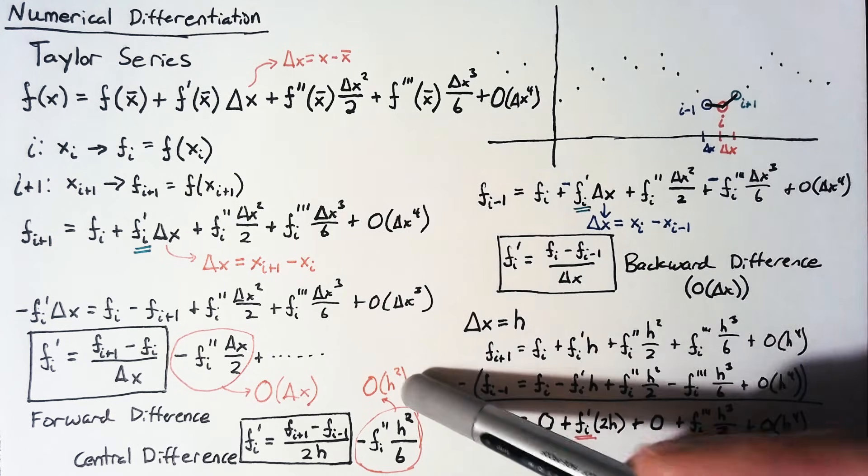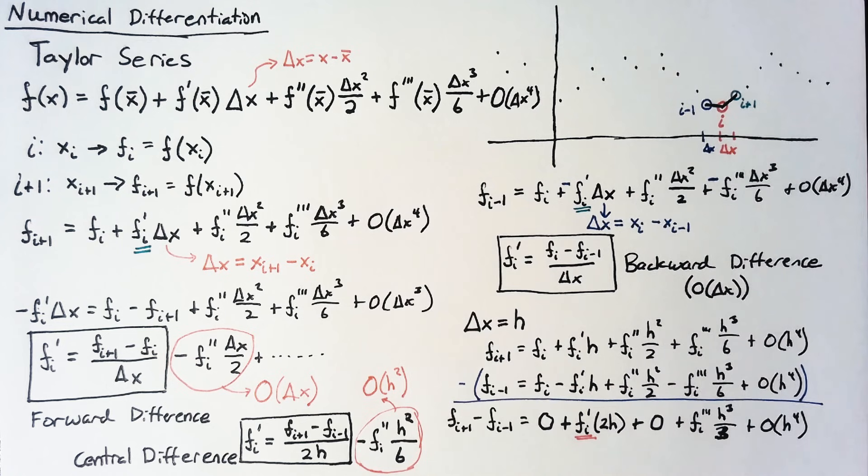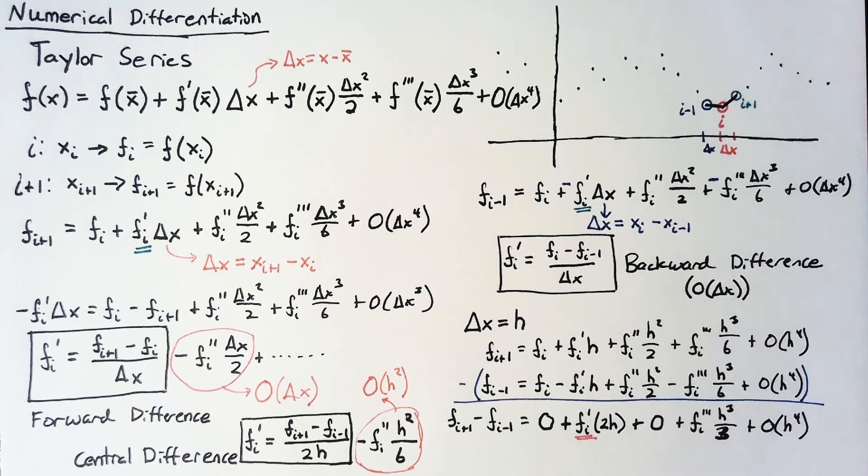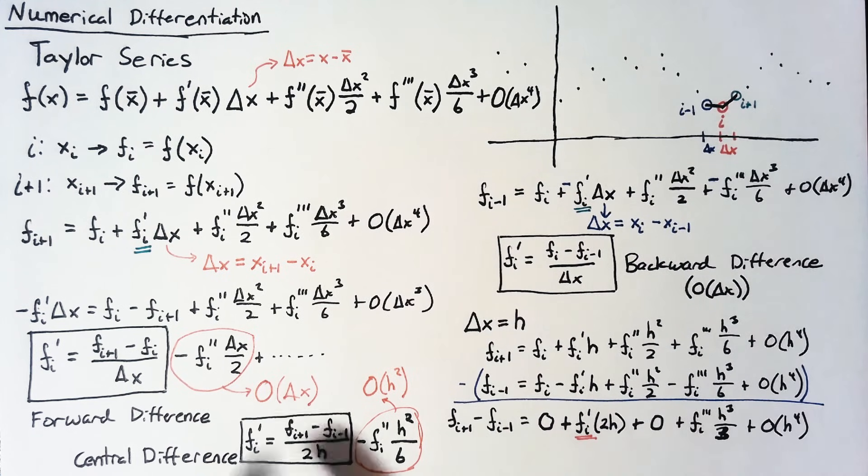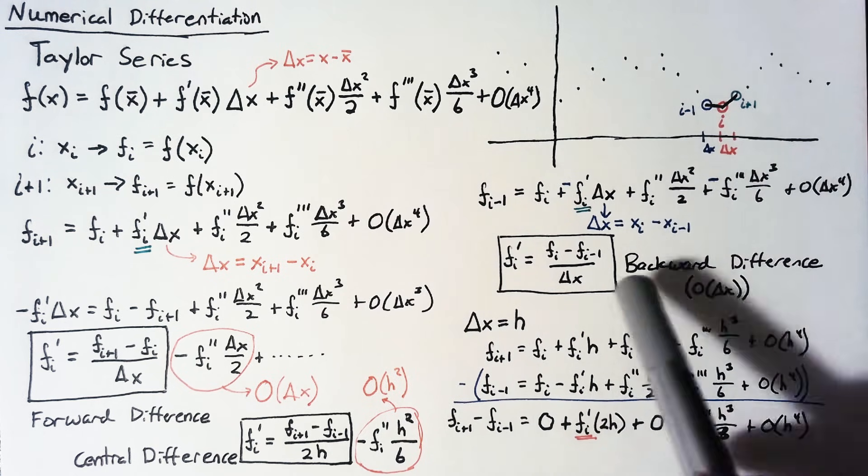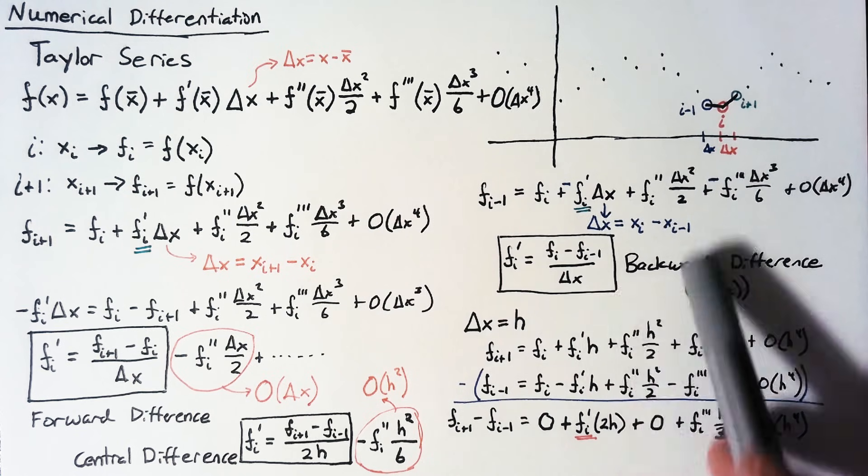So, why is it important that we have this h squared? Well, let's say that we want to reduce our error by a factor of 100. If we're using forward difference or backward difference, these things that have an error on the order of delta x, then we need to increase our sampling rate by a factor of 100. We need to have 100 times as many points in order to reduce that error.